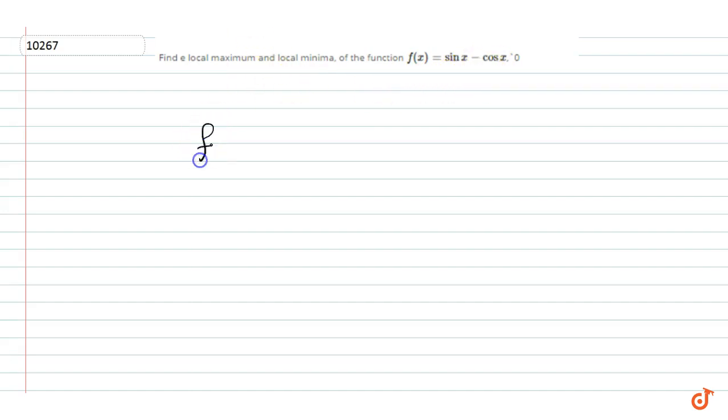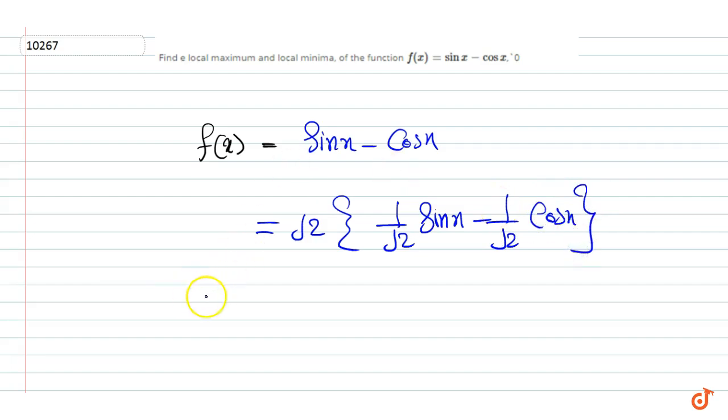Here we have f(x) = sin x - cos x. Multiplying and dividing by root 2, we get root 2 times (1/√2 sin x - 1/√2 cos x).